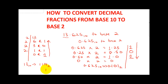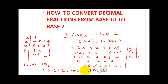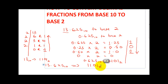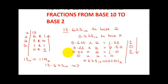Counting from the top down, 0.625 base 10 gives us 0.101 base 2. Therefore 13.625 base 10 is going to give us 1101.101 base 2. That is exactly how to convert from base 10 to base 2.